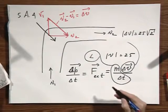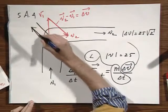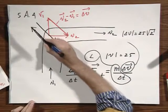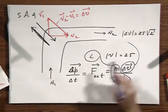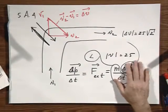Now since action equals minus reaction, the water will push back on the wall in exactly the opposite direction but with the same magnitude. So I think you have enough ammunition now to do this problem.